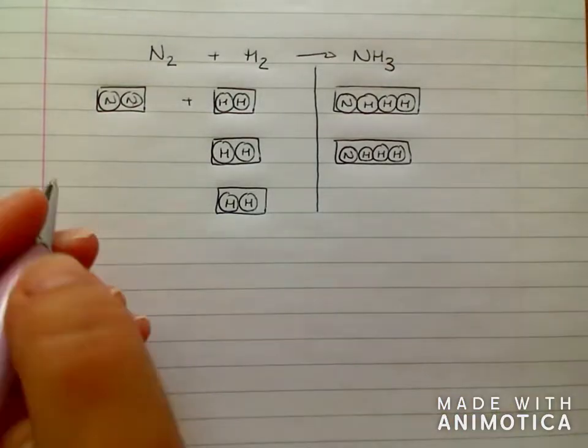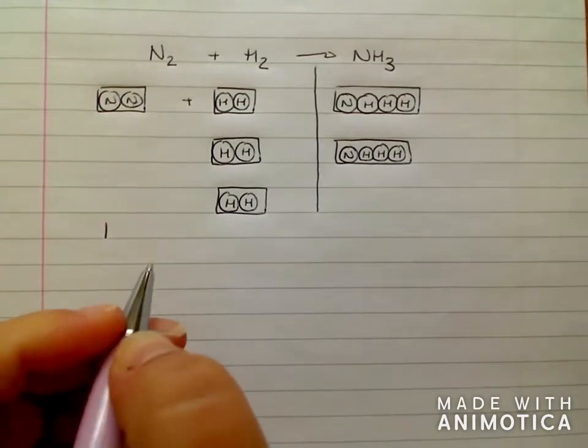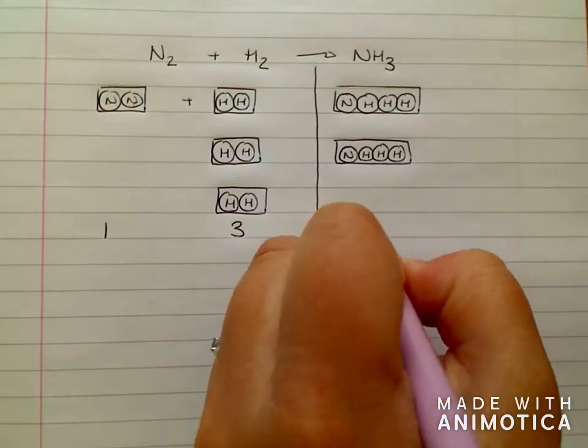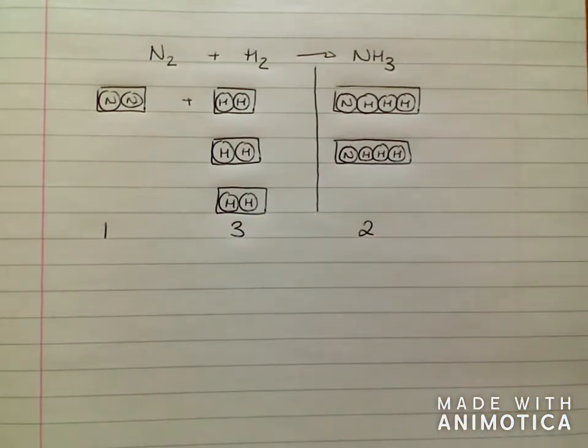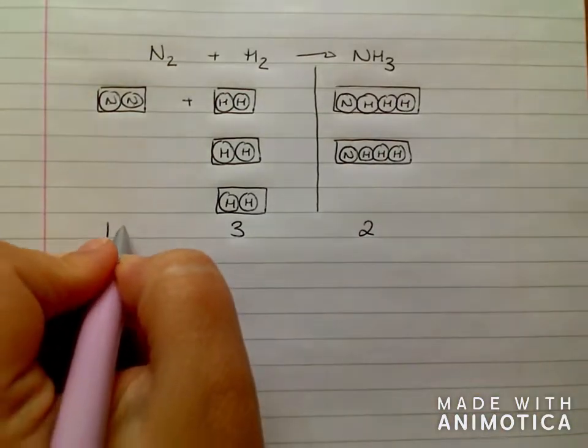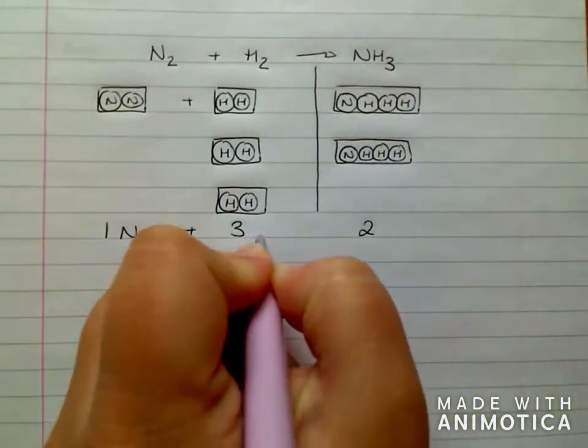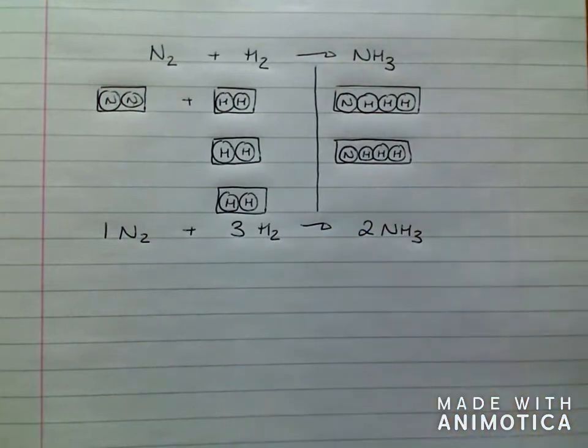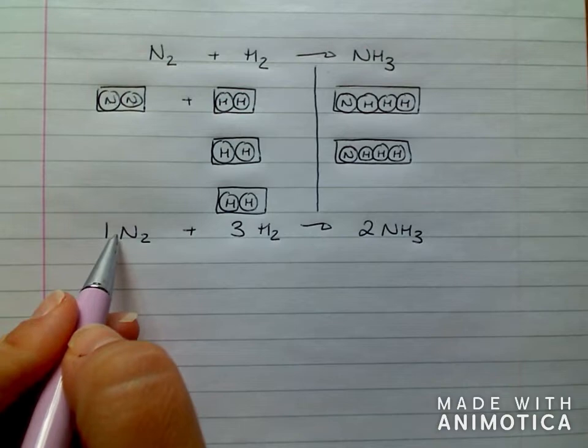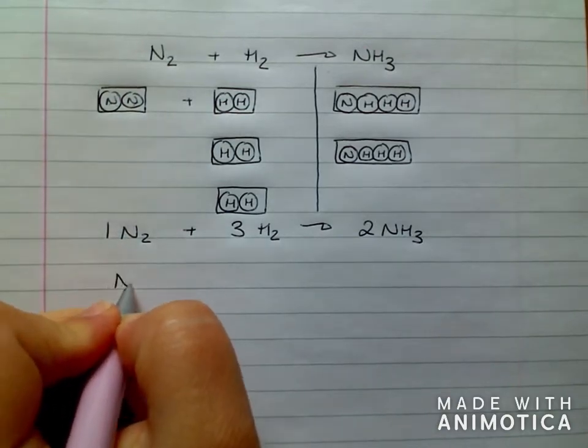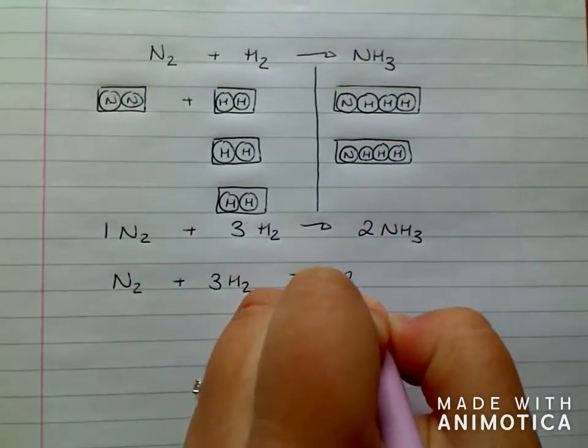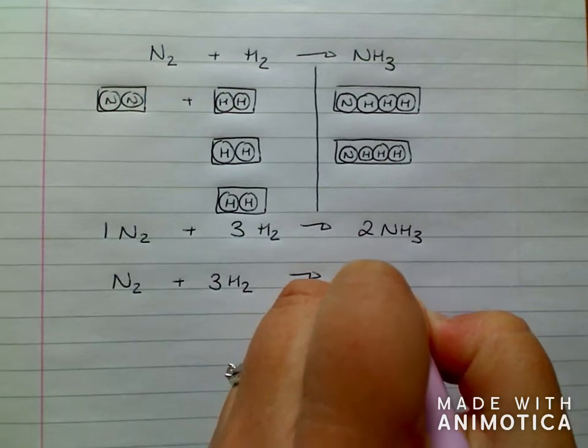Just like before, I count up my boxes. So, I have one box of nitrogen, three boxes of hydrogen, and two boxes of NH3. Then, bring my formula down. So, one N2 plus three H2 makes two NH3. Finally, I'll write it again, not including that one. So, it becomes N2 plus three H2 makes two NH3.